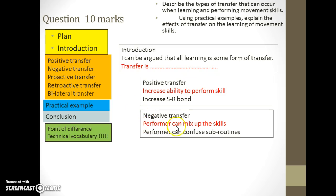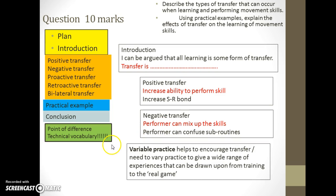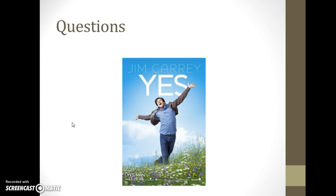For negative transfer, rather than saying 'the performer can mix up skills,' say 'the performer can confuse subroutines' — more precise and technical. In the conclusion, if you haven't already covered all the points, use it to add them in — for example: 'Varied practice is absolutely essential for transfer to take place.' Make sure both the introduction and conclusion are part of your plan; even just writing the words 'introduction' and 'conclusion' will give you the structure needed to achieve those higher marks.